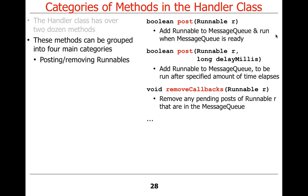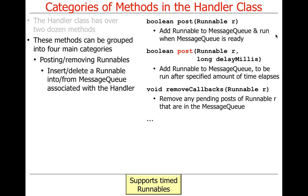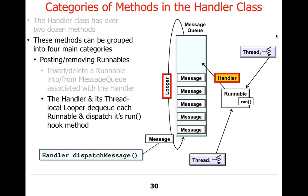You can post runnables with no timing relationship, or post them to run after a certain amount of time — that's where scheduling comes in, allowing timed runnables. The handler and its thread-local looper dequeue each runnable and dispatch its run hook method. There's a method on handler called dispatch method, and the thread that's doing this gets the message, finds its runnable, and calls the run hook method, which runs in the thread running the event loop.